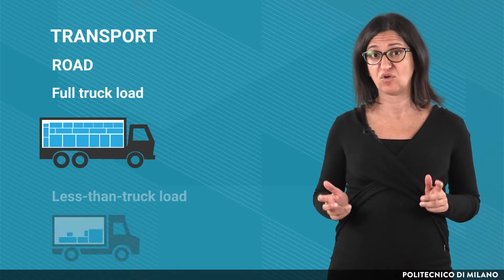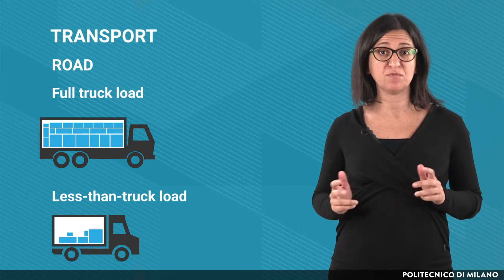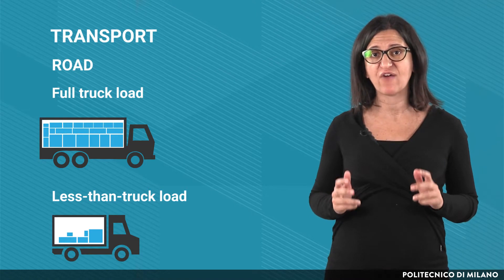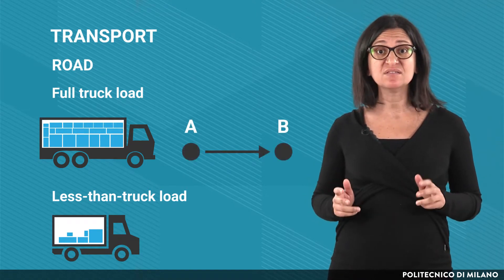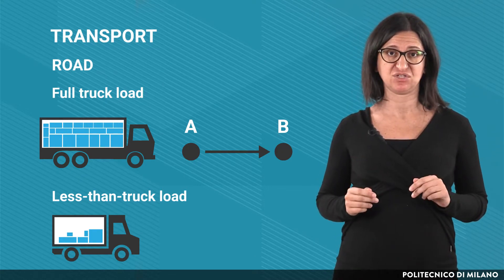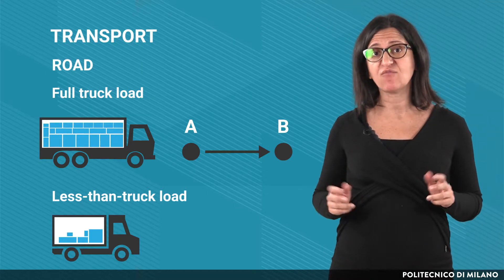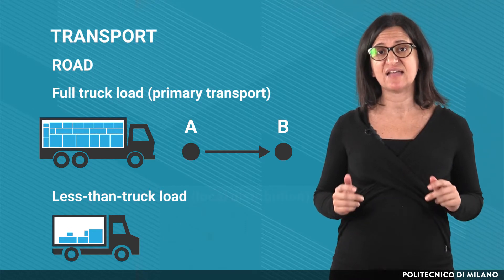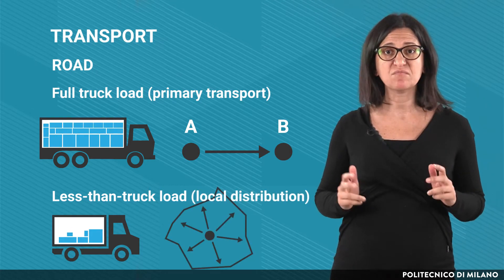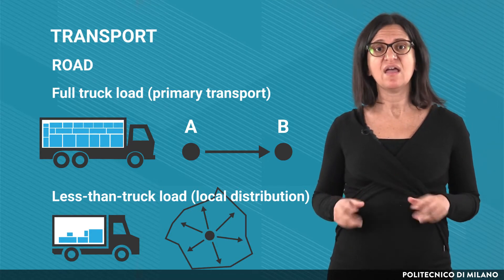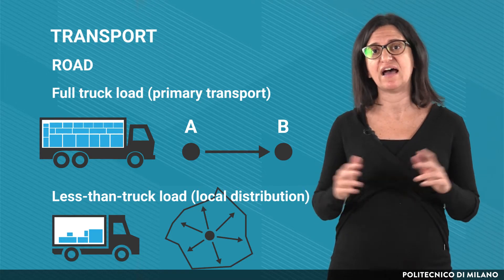Considering road transport, there can be full truck load and less than truck load shipments. In the full truck load option, a semi-trailer or a trailer is dedicated to a shipper who fills it with freight for one destination. The shipment is usually picked up from one point of origin and delivered to one point of destination, and is generally used for the primary transport. The less than truck load option is used instead for local distribution, typically combining small trucks for pickup and delivery and large trucks as line-haul collection vehicles.